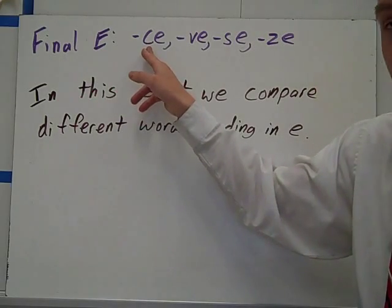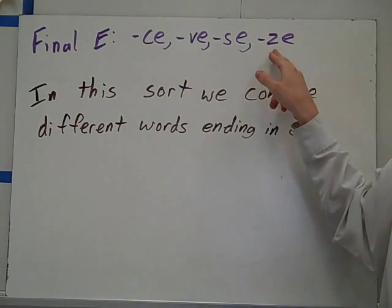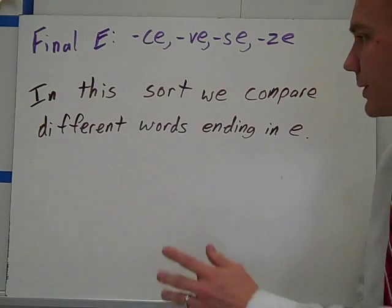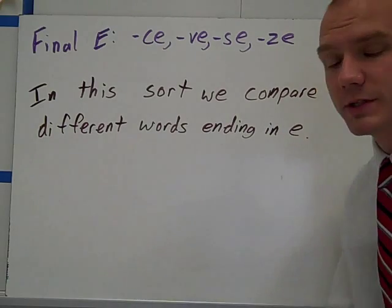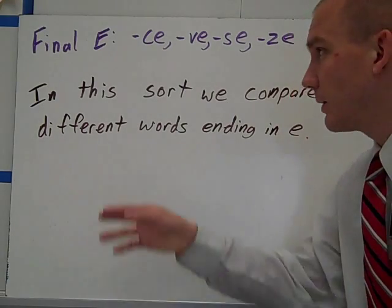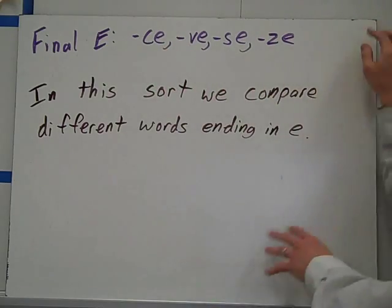Final E, spelled C-E, V-E, S-E, and Z-E. In this sort, we're going to compare different words ending in E, specifically the sounds that are made by the different spelling patterns.